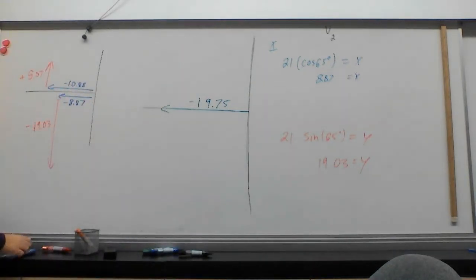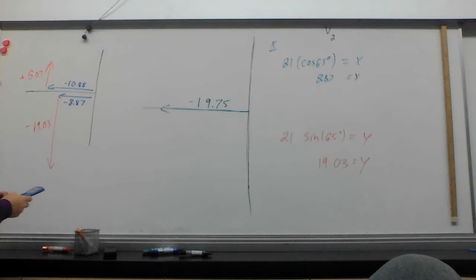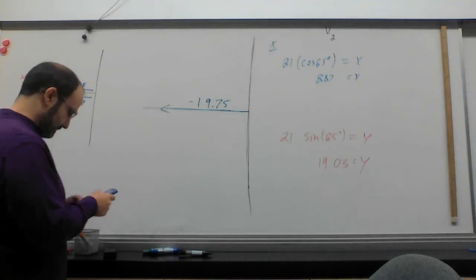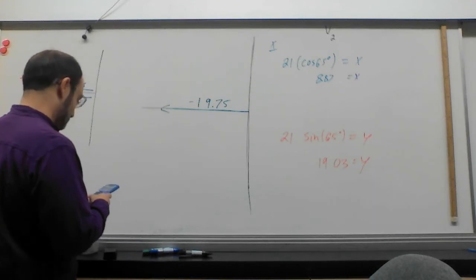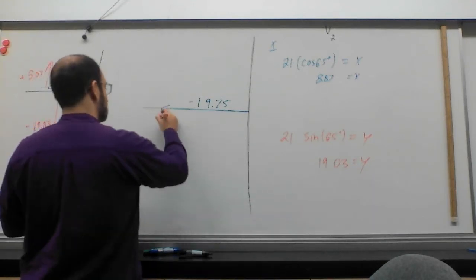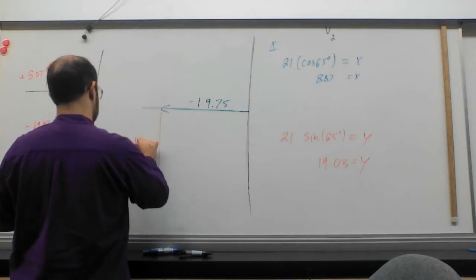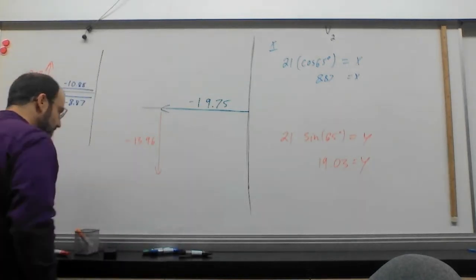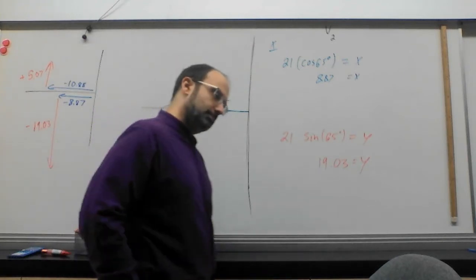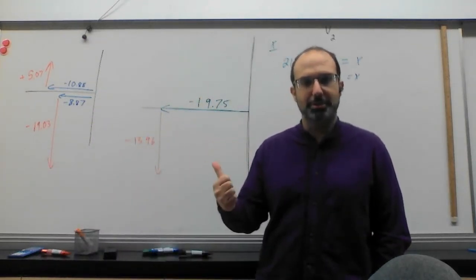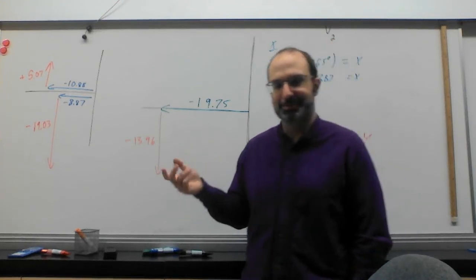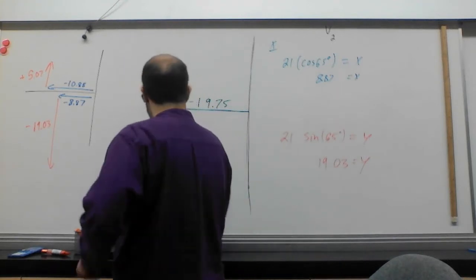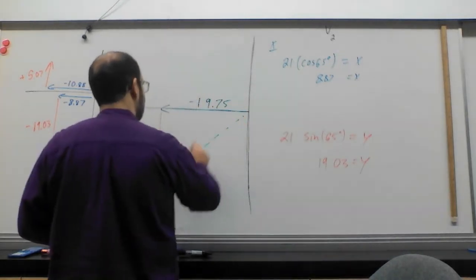19.75 going left. And then I compare these two. And one is up and one is down. So obviously they subtract. And we get 13.96. That question now looks like a question we know how to do. It's just Pythagoras now. We just need to find this and this.